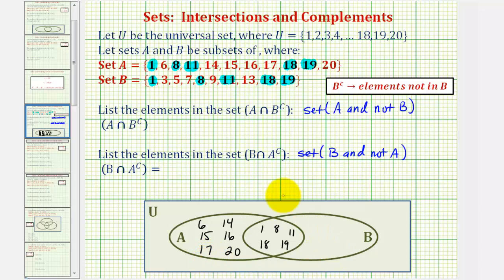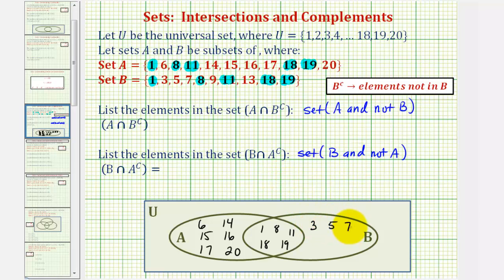Now looking at set B, notice that elements three, five, seven, nine, and thirteen would only be in B, which would be in this region here. So we have three, five, seven, nine, and thirteen.